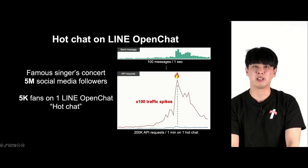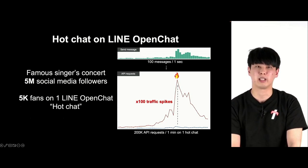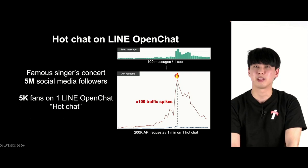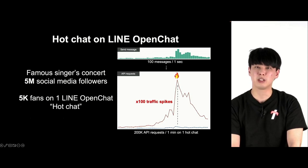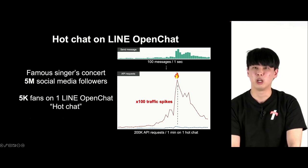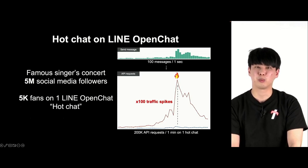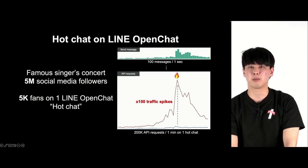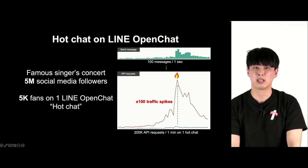There are also open chats where people watch TV shows together and talk about their favorite actors or models. In these open chats, the traffic can surge by more than 100 times. If you look at the right-hand side, this is an open chat where 5,000 people have joined. In a single second, millions of chats can be sent, and the API requests are maximum 200,000 per minute. That is a 100-times surge compared to general open chats. These are called hot chats.